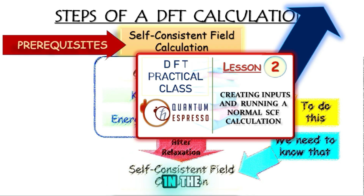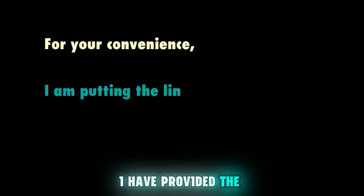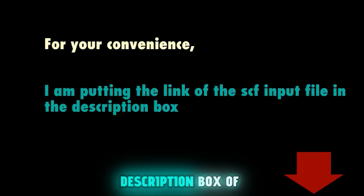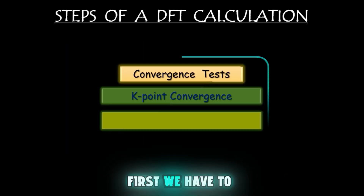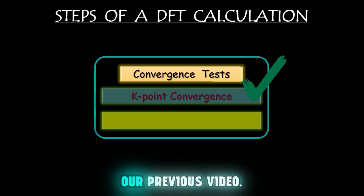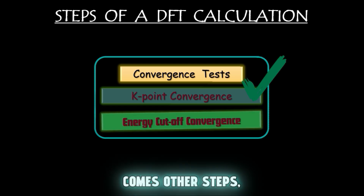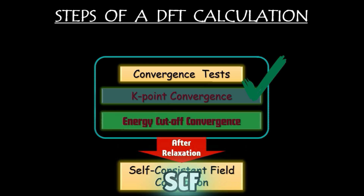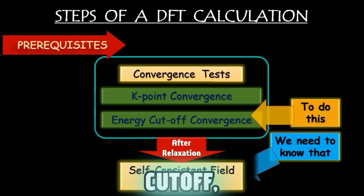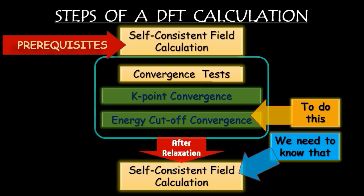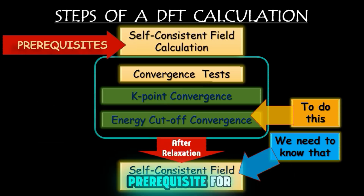The only prerequisite is you have to know how to run a self-consistent field calculation, which I have already described in the second tutorial of this lecture series. I have provided the input file of that SCF run in the description box. First we ran a k-point convergence test in the previous video, and now we are at energy cutoff convergence test. To do this test you have to run several SCF calculations, which is why learning SCF calculation is a prerequisite.